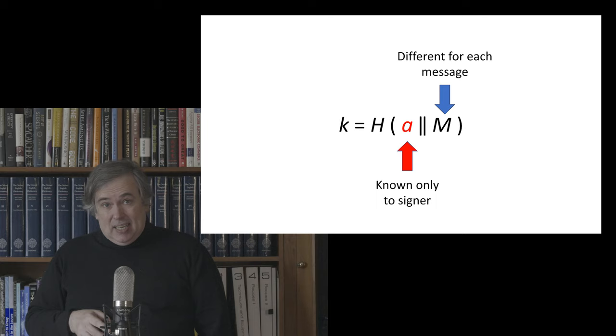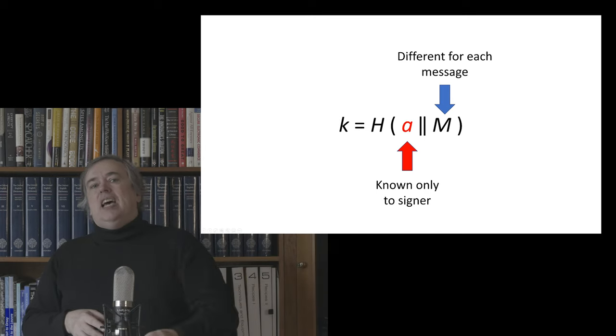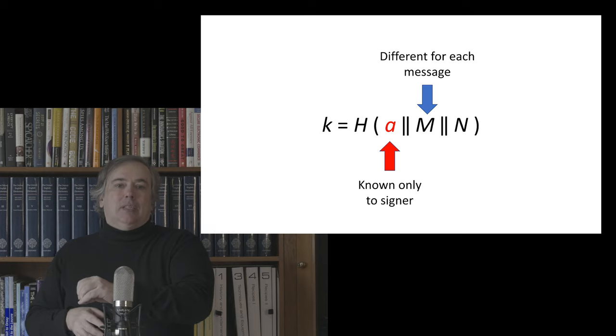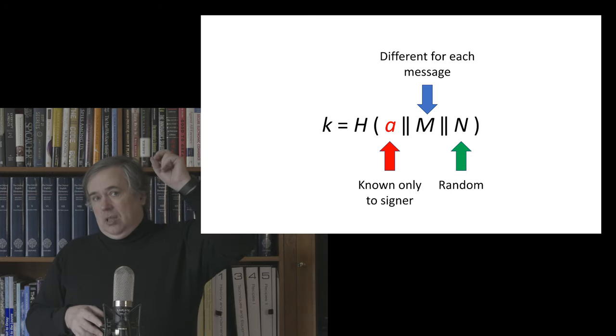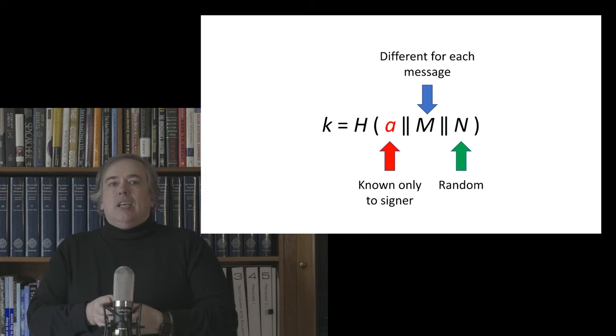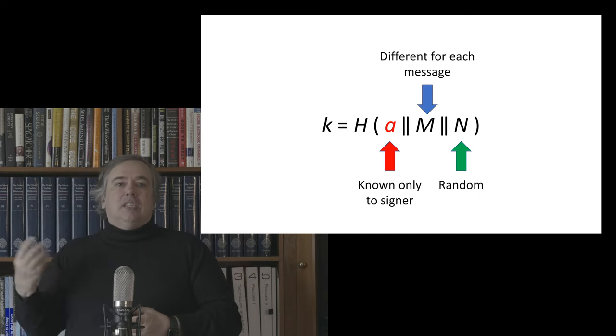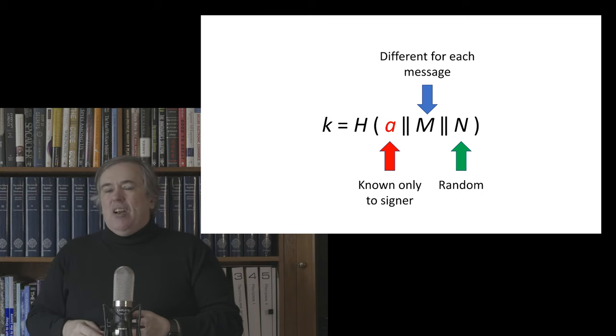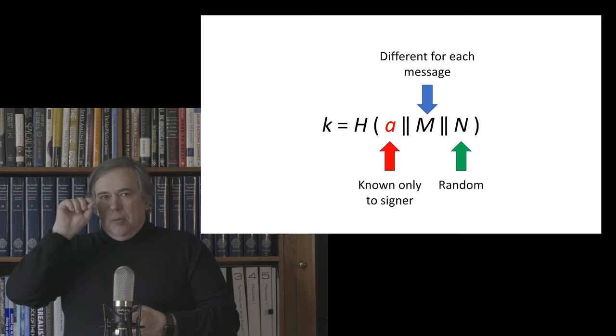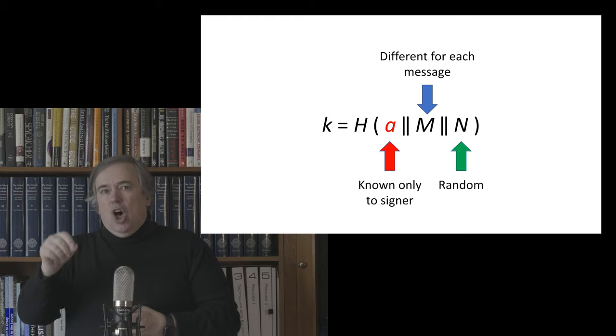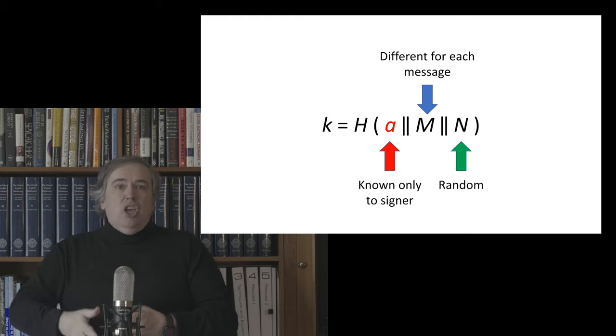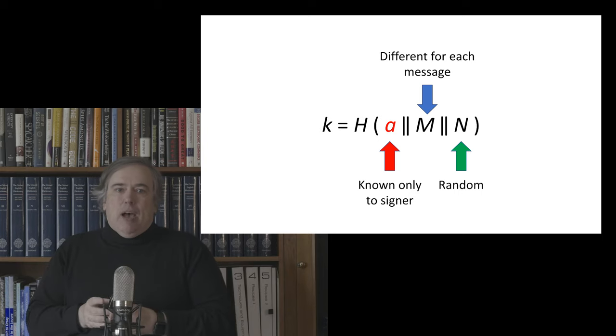And so in order to avoid that leakage, some people say, well, we want to have a non-deterministic way of calculating k. And so what we're going to do is the same as before, except that this time we're going to introduce a random element in addition to the value of the message and also some private value that is only known to the signer. It doesn't necessarily need to be the private key at this point, so long as we never possibly use this value for any other signing key that might be involved. And this non-determinism allows us to defeat the side channel attacks.